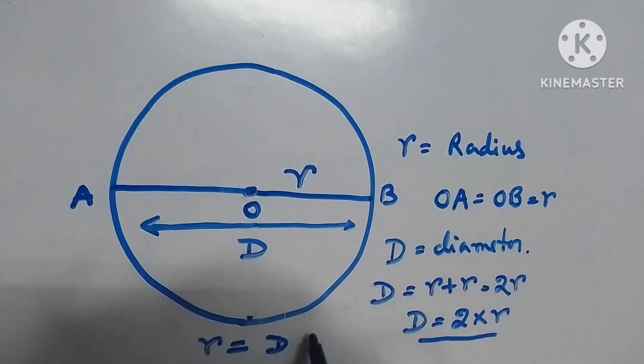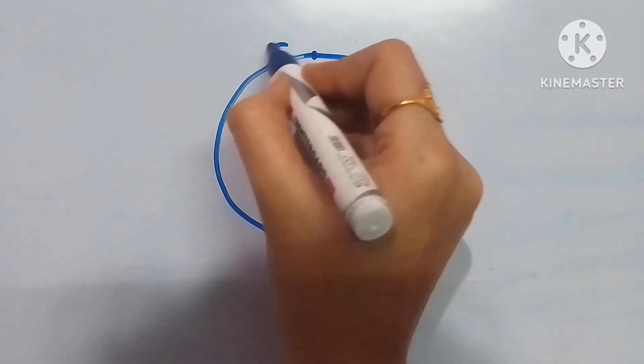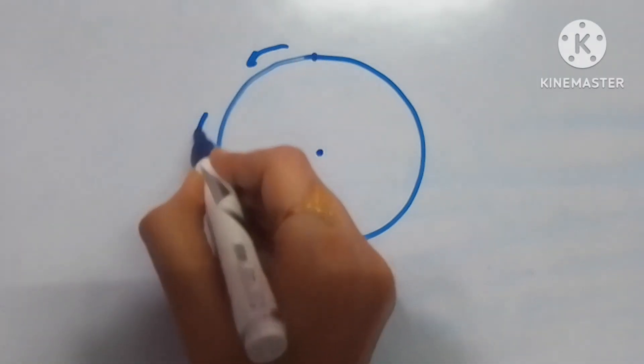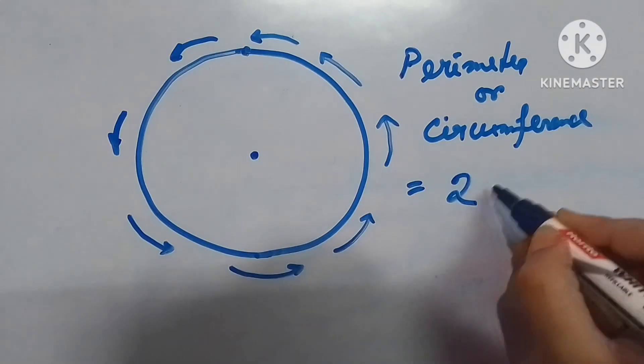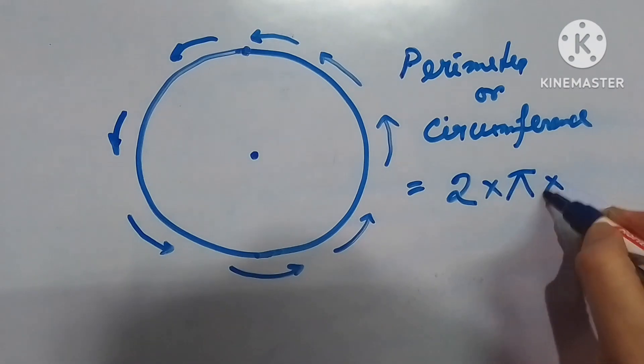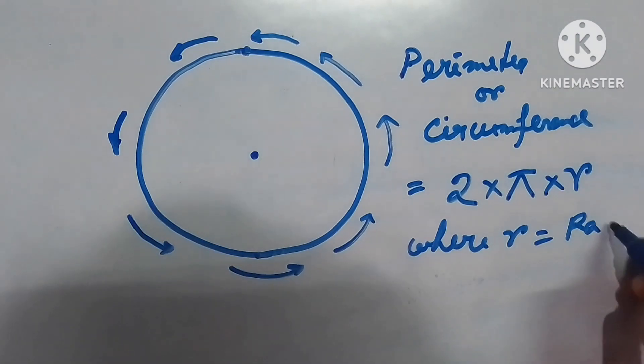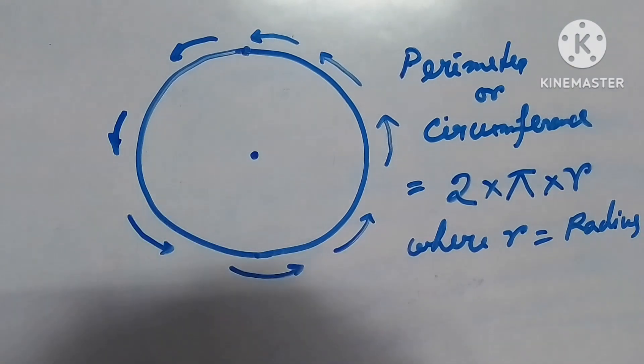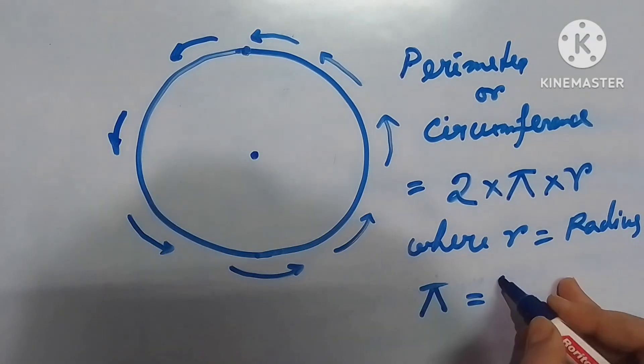So radius will be half of diameter or d by 2. Now the total length of the boundary of a circle will be the perimeter or the circumference of the circle. The formula will be 2 pi r. Here r is the radius of the circle and pi is one constant, its value is fixed, that is 22 by 7 or 3.14 approximately.